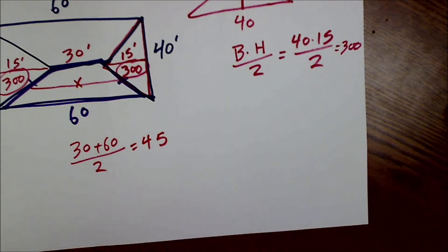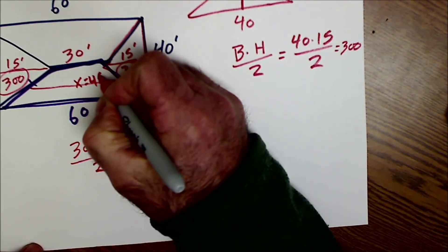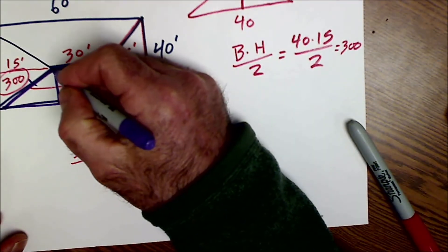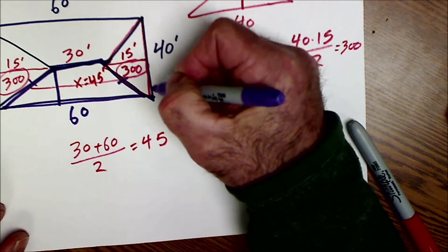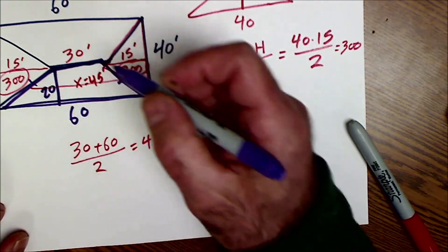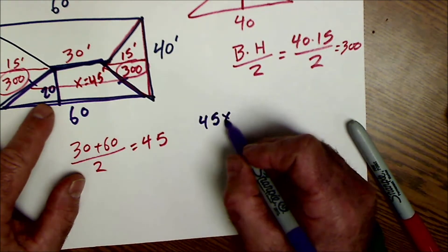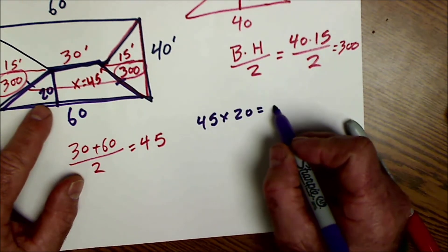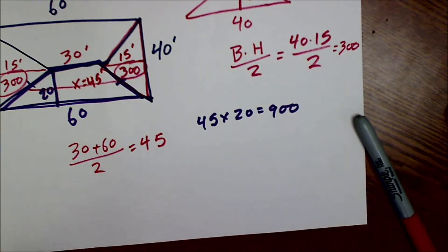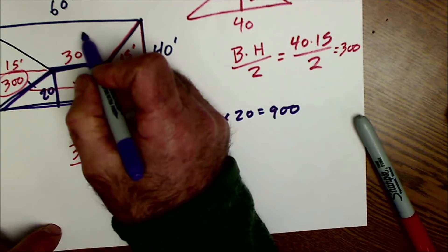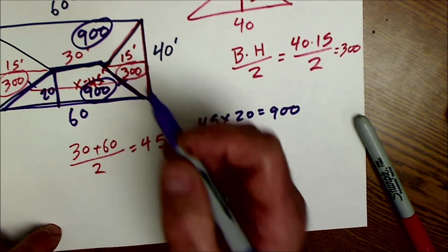So I'm going to take that 45, and that's my median of that trapezoid, and I take that median, and I multiply it by the height here. And that height, if this is 40, then this is 20. So that means I have 45, the median, times the height, 20, to get 900. So that means this trapezoid's 900 square feet. This one's the same, 900 square feet.